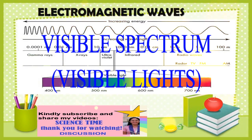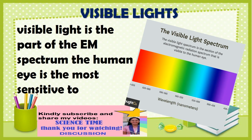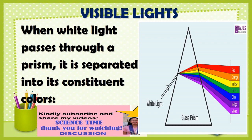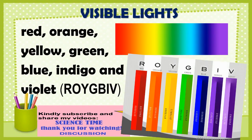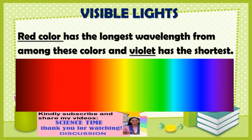The visible spectrum. Above infrared frequency comes visible light. By definition, visible light is the part of the electromagnetic spectrum the human eye is most sensitive to, and it is a very small portion of the electromagnetic spectrum. When white light passes through a prism, it is separated into its constituent colors: red, orange, yellow, green, blue, indigo, and violet. These colors do not distinctly separate but continuously change from red to violet. Red has the longest wavelength among these colors and violet has the shortest.